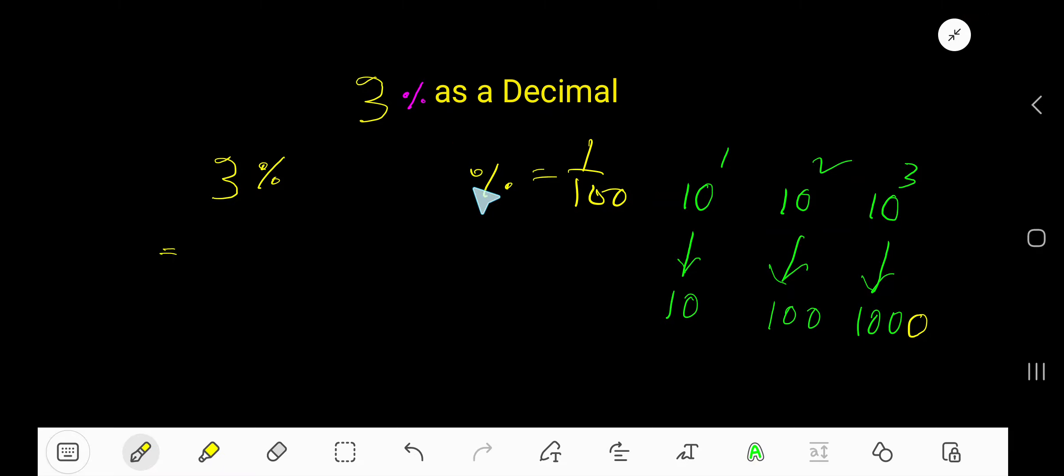Three percent as a decimal. Look, three percent means three times percentage, which means one over one hundred. Now we can rewrite three over one hundred. Look: ten, one hundred, one thousand—these are called powers of ten. To divide this whole number by a power of ten, what will happen? Just count the number of zeros here: one zero, two zeros. So the decimal point will move.